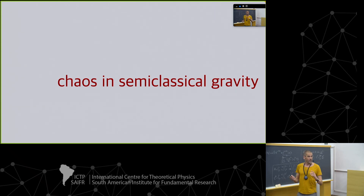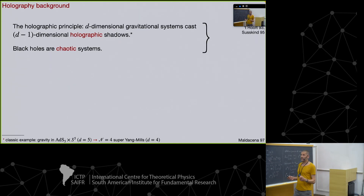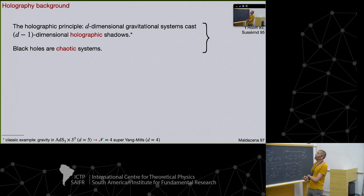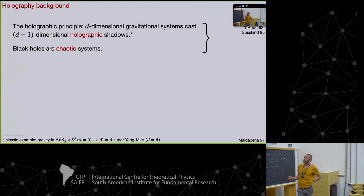Now comes the weird part — we're starting to go into gravity. Our starting point is the holographic principle. In a super short formulation: there is a strong belief that if you consider d-dimensional gravitational systems, they cast a shadow in the sense that the information or the physics is encapsulated in the quantum theory in one dimension less. This is the idea of the holographic principle. Its origins go back to the 1980s.